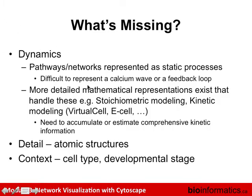What's missing in typical network analysis? These pathways and networks are typically represented as static processes, even though we know they're dynamic. We just see one snapshot of them, representing the set of things that could happen at any time. You could do detailed mathematical simulations of pathways, but people typically don't because we usually don't have the required information, like rate constants for enzymatic reactions.